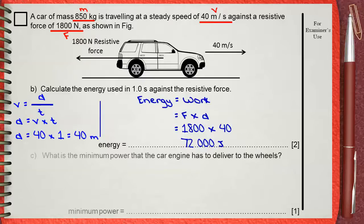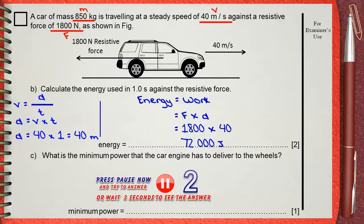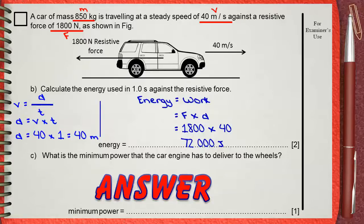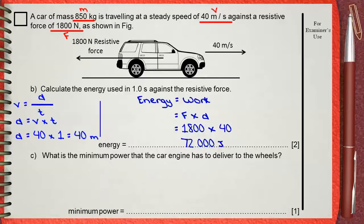Question C: What is the minimum power that the car engine has to deliver to the wheels? This is a direct question. Power equals work over time, or energy over time, which is 72,000 joules divided by one second. So, the minimum power will be 72,000 watts.